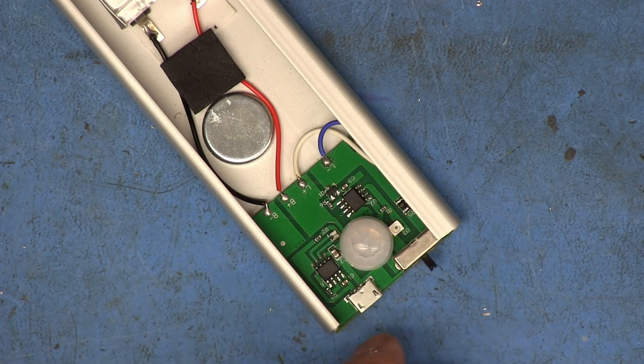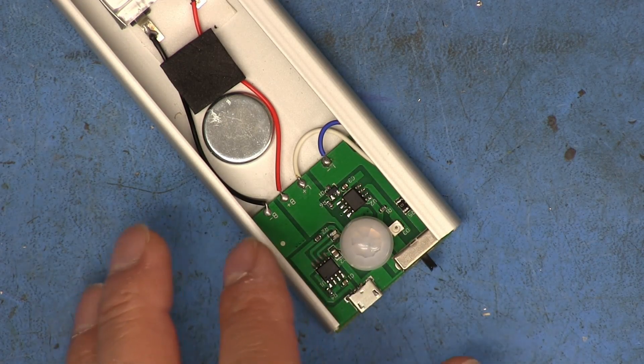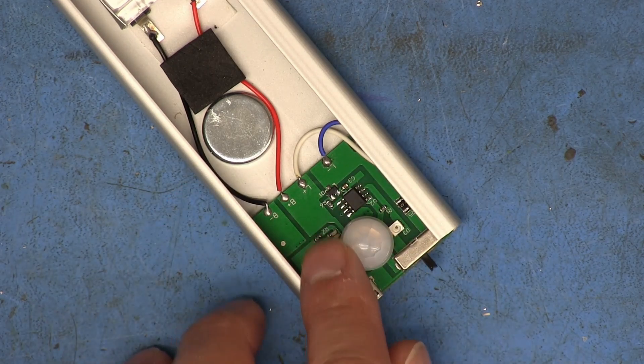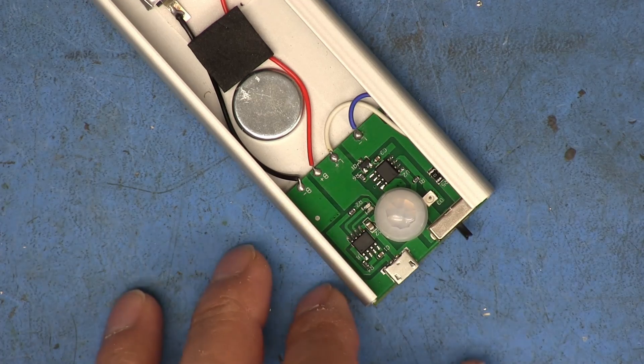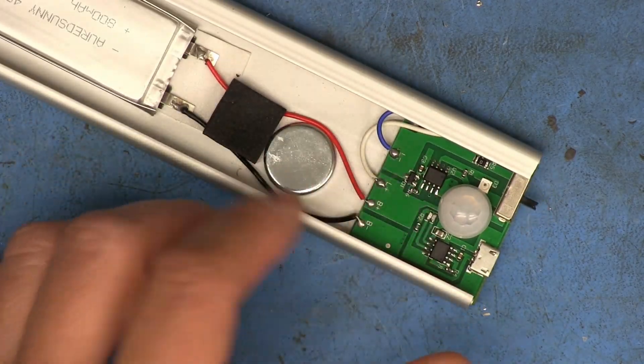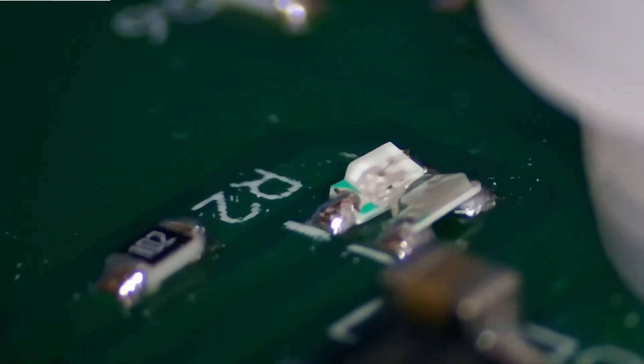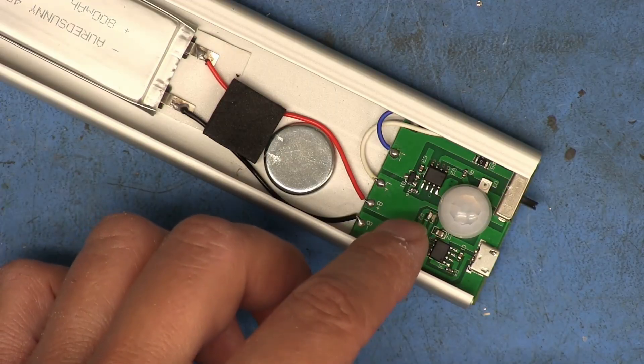There was nothing else really on the board that was kind of dodgy looking or anything like that, except for the LEDs down there, those look a little wonky. But I mean, as long as they function properly, it's not a big deal. It doesn't look like they're soldered improperly or anything like that. Or I mean, it doesn't look like the solder is broken. I mean, as far as being soldered properly, yeah, they don't look that great, but whatever.